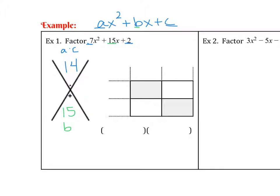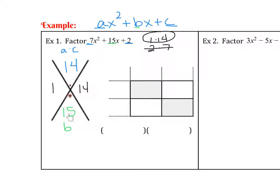Notice the signs here. What multiplies to 14 but adds to 15? The factors of 14 are 1 times 14 or 2 times 7. Which of these will add to 15? Well, 2 plus 7 is definitely not 15, but 1 plus 14 is. So we'll put 1 and 14 here. 1 times 14 is 14, and 1 plus 14 is 15. So that is correct.